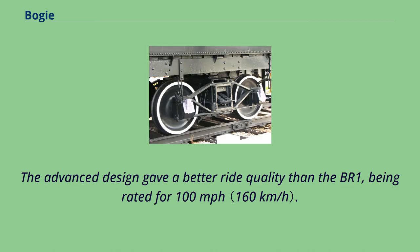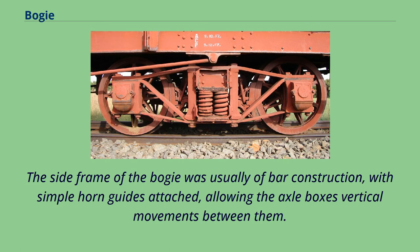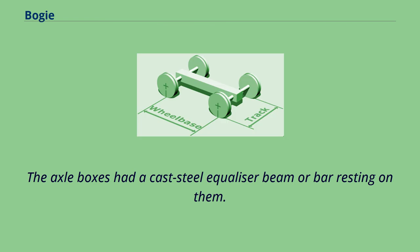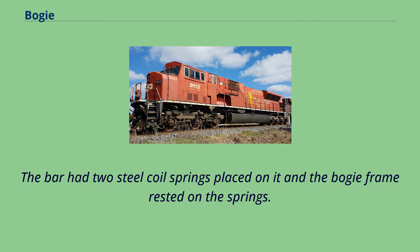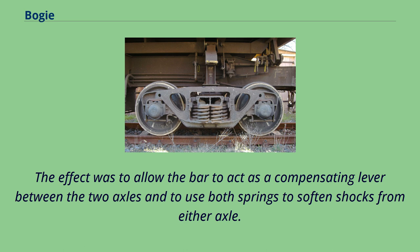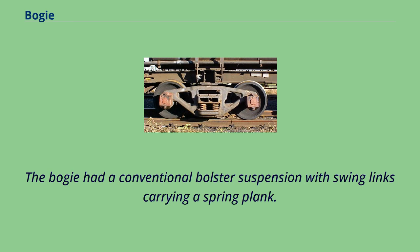The advanced design gave a better ride quality than the BR1, being rated for 100 miles per hour. The side frame of the bogey was usually of bar construction, with simple horn guides attached, allowing the axle boxes vertical movement between them. The axle boxes had a cast steel equalizer beam resting on them, with two steel coil springs placed on it and the bogey frame resting on the springs. This allowed the bar to act as a compensating lever between the two axles, using both springs to soften shocks from either axle. The bogey had a conventional bolster suspension with swing links carrying a spring plank.